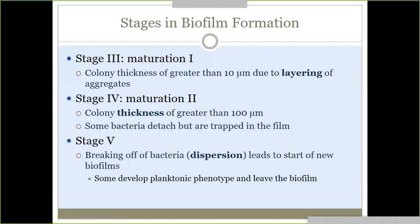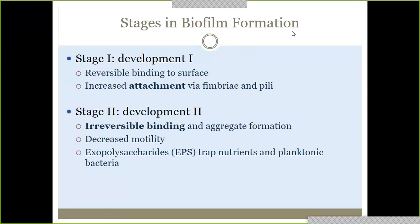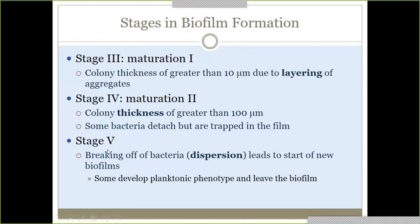Stage three, or maturation one, is where we layer up and build the biofilm community. Stage four, maturation two, is where the thickness becomes greater than 100 micrometers — we've really built it up. Stage five is possible dispersion, meaning some bacteria can break off and start a new biofilm elsewhere, or become a planktonic free-floating biofilm. So you go through initial attachment, irreversible binding and polysaccharide layering, thickening, and then some may disperse.